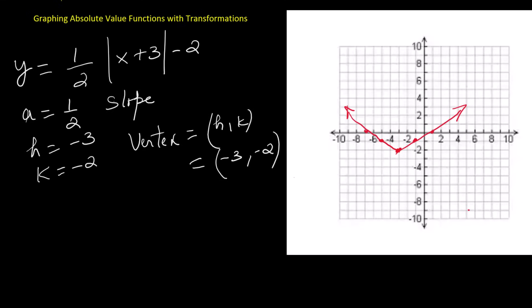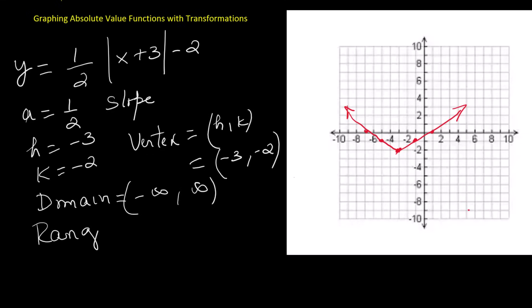Connecting these points forms a V-shaped graph that opens upward but spreads out more gently. The domain is all real numbers, written in interval form as open parentheses negative infinity comma positive infinity close parentheses. The range is all values greater than or equal to negative 2, written in interval form as closed bracket negative 2 comma infinity close parentheses.